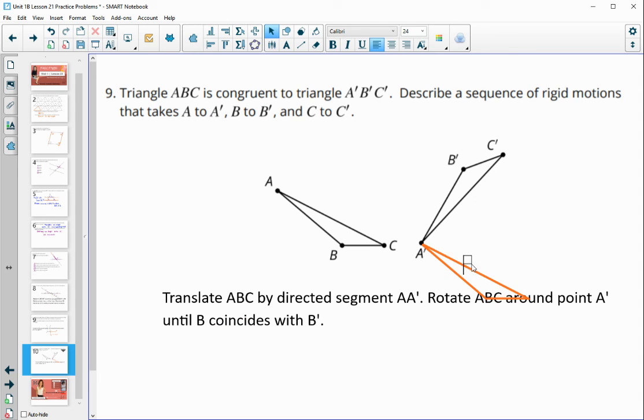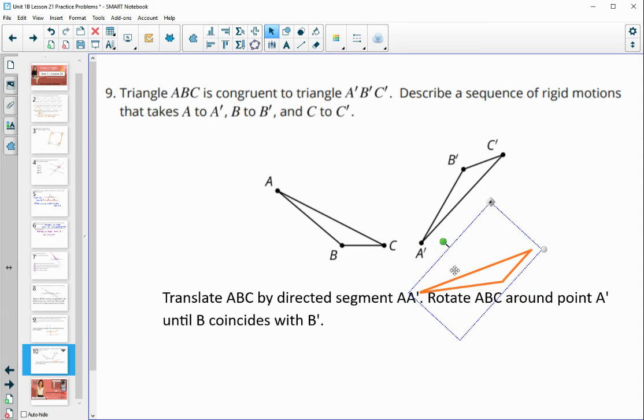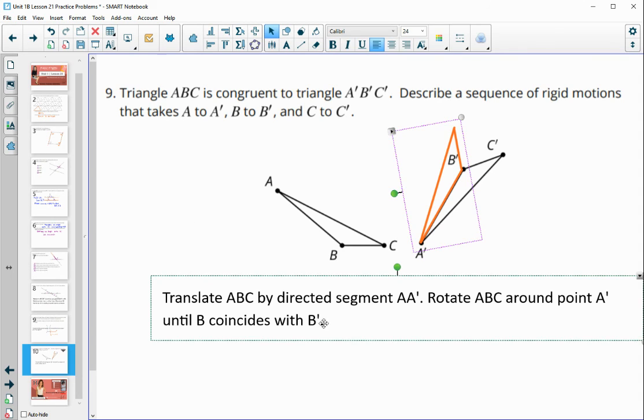And so let's take a look at what this does. So if we do this when we rotate and A needs to stay in the same spot. So I'm just going to keep putting A back in place until I get B to land on B prime. And so that would be there. And so now we can see that C doesn't coincide with C prime yet.